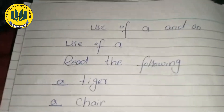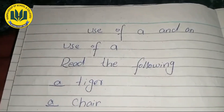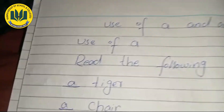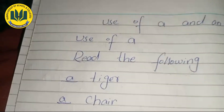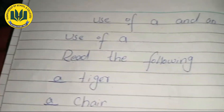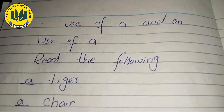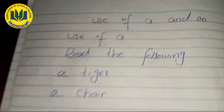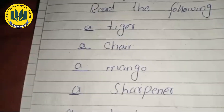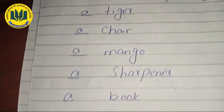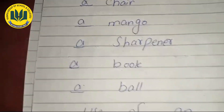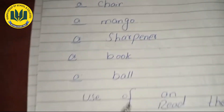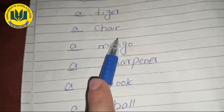We also learned the use of 'A' and 'An'. 'A' is used with consonant sounds: a tiger, a chair, a mango, a shopper, a book, a ball — all begin with consonant sounds.